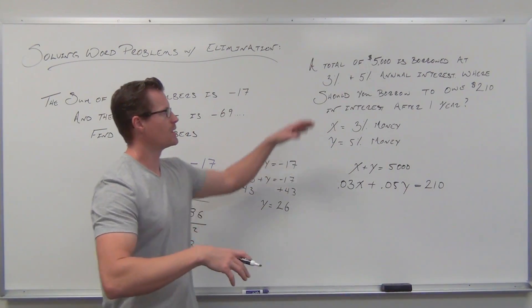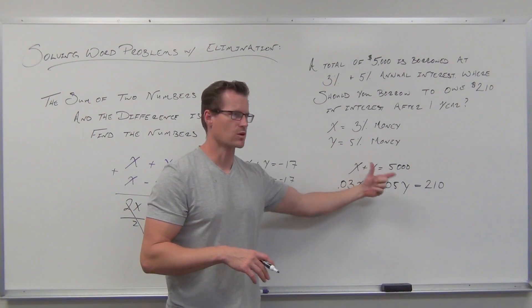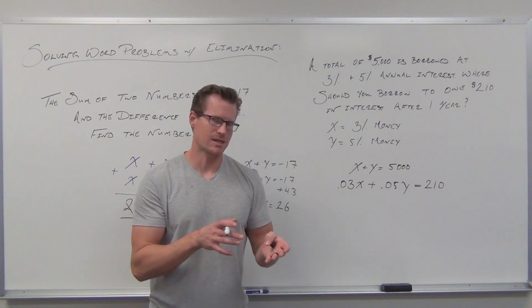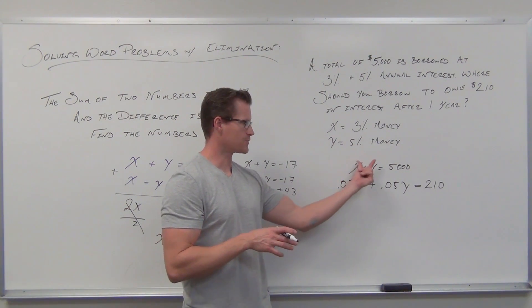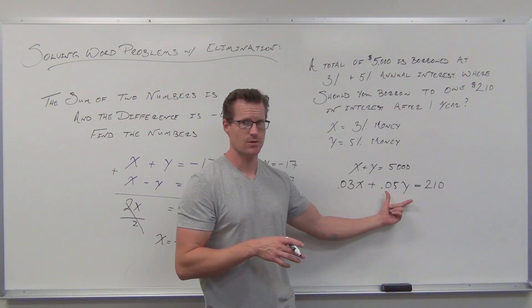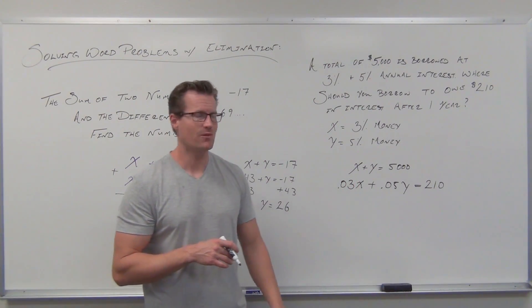Let's recap. The amount of money adds to $5,000, so x + y = 5000. The interest adds up: 3% of x plus 5% of y equals $210. That's another system of equations.